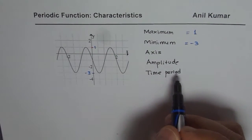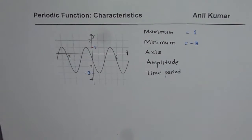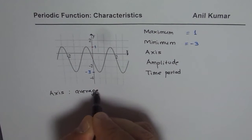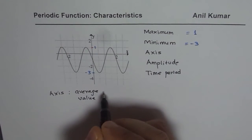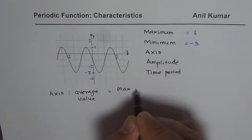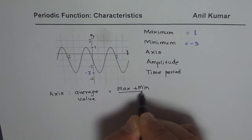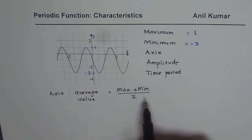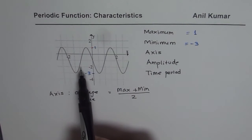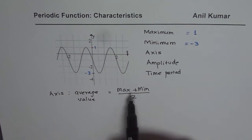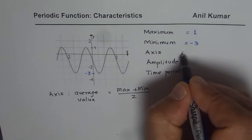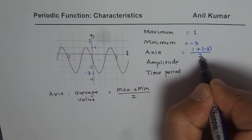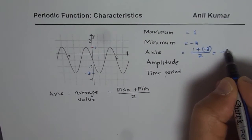Axis, amplitude, and time period can be calculated from here. The axis is the average value — think of axis as the average. You can add maximum and minimum and then divide by two to get the axis. So in this case, since maximum is one and minimum is minus three, it would be (1 + (−3)) / 2, which is −2 / 2 = −1.